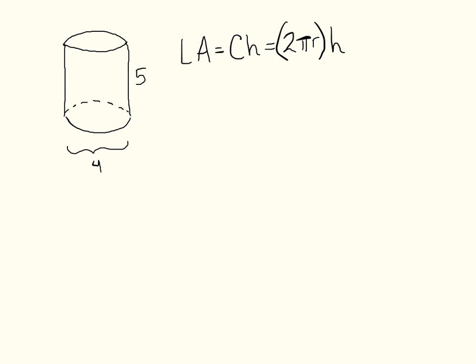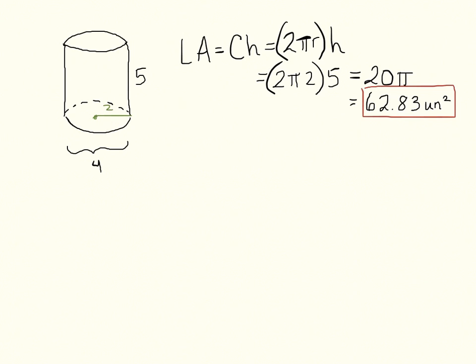Here we have a cylinder where the full diameter is 4, so the radius is 2, and the height is 5. First we find the lateral area: LA = 2πrh = 2π(2)(5) = 20π. Using a calculator, that gives us approximately 62.83 units squared.